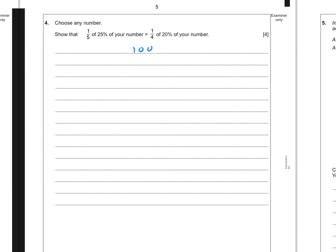So again, if we first of all found 25% of 100, that's going to be 25. And then one-fifth of that would be 5.